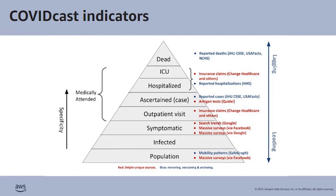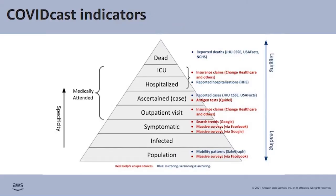The very top of the severity pyramid are deaths — specifically, deaths reportedly due to COVID-19. At the very bottom are population-level behaviors relevant to tracking or understanding the pandemic, like mobility patterns and whether people are wearing masks. Deaths are officially tracked through public health reporting and have been available for the entirety of the pandemic through aggregators like Johns Hopkins University's CSSE group. Below deaths are critical hospitalizations, and below that are hospitalizations.